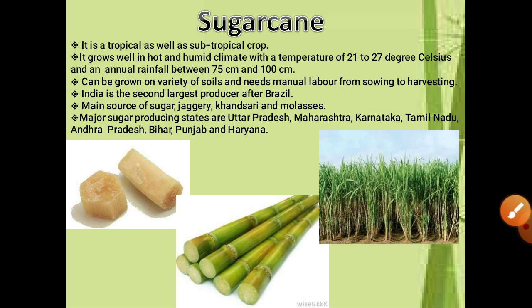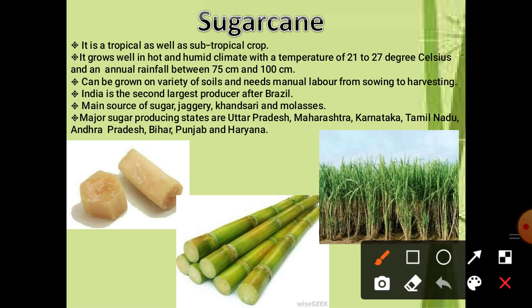Sugar cane is also very important and related to our day-to-day life. From sugar cane we produce sugar in industries. It is a tropical as well as subtropical crop. Climatic conditions for sugar cane: it grows well in hot and humid climate with a temperature of 21 to 27 degrees. Annual rainfall required is 75 to 100 cm. So rice requires above 100 cm, wheat requires 50 to 75 cm, and sugar cane requires 75 to 100 cm of annual rainfall.